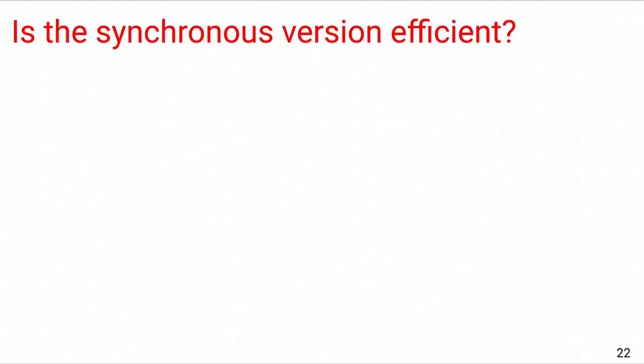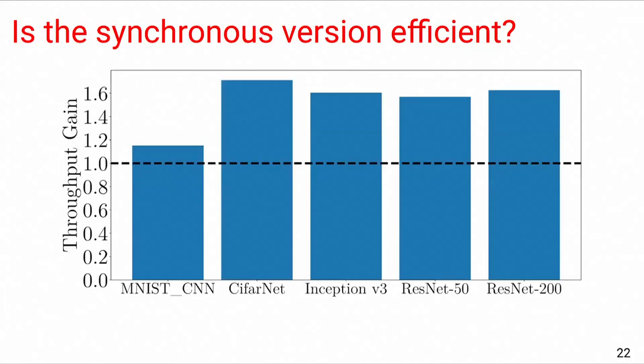The second experiment I'd like to show you here is about the efficiency of the synchronous protocol compared to the asynchronous one. In this set of experiments, we deploy both variants with multiple models shown here on the x-axis. For each experiment, we measure the throughput of the system, which is basically the number of updates the system can do in one second. The throughput gain on the y-axis denotes the ratio of throughput in the synchronous case to the system throughput in the asynchronous case. We experimented with multiple models ranging from small models to train the MNIST dataset to large models like ResNet-50 and ResNet-200. From this figure, we can see that the synchronous version always outperforms the asynchronous one, especially with big models. We quantify this performance boost to up to 70%.